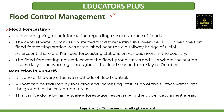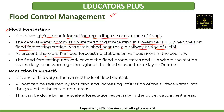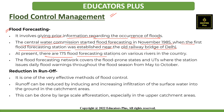Now let's discuss flood control and management. The central and state governments have taken various steps to reduce the menace of floods. The first is flood forecasting, which involves giving advance information about the occurrence of floods so people can move to highland areas and prepare. It helps in taking timely action to reduce loss of human lives, livestock, and movable properties. The Central Water Commission started flood forecasting in November 1985 when the first flood forecasting station was established near the old railway bridge in Delhi. At present, there are 175 flood forecasting stations on various rivers across India.